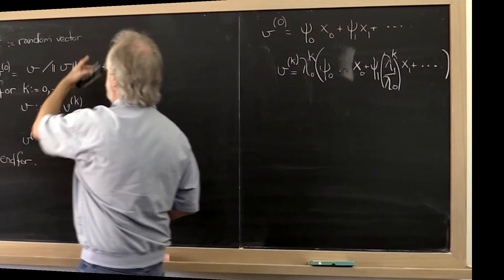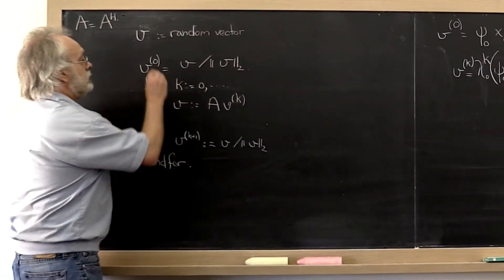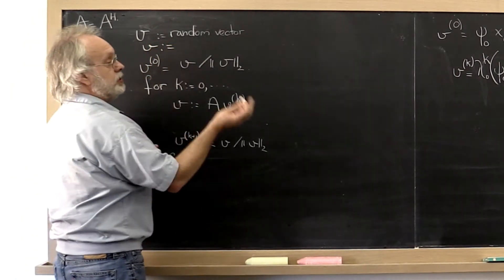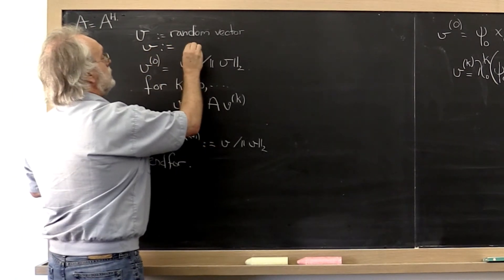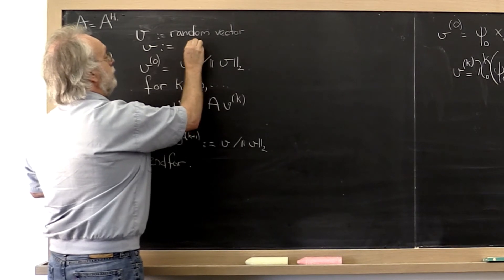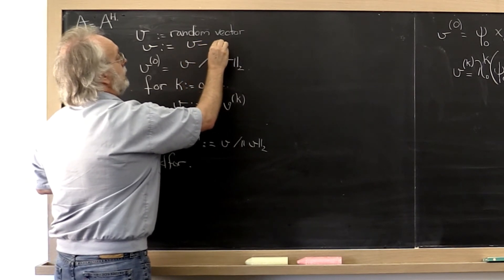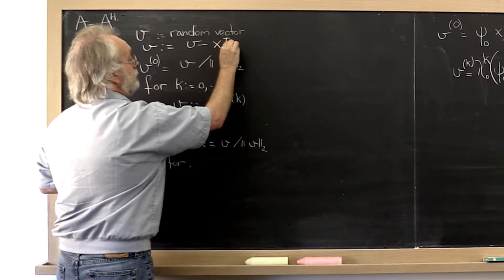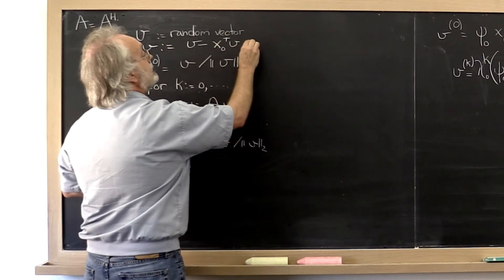When we pick a random vector, we start by subtracting out the component of v in the direction of x0, which is equal to v minus x0 transpose v times x0.